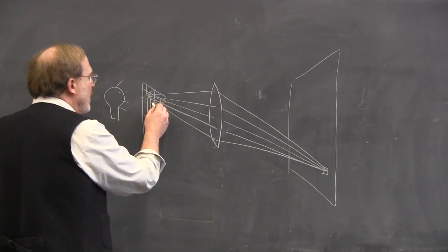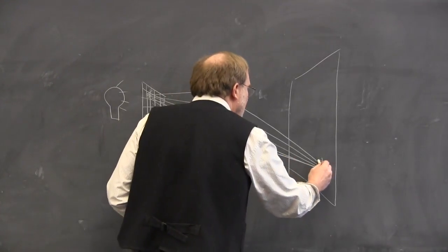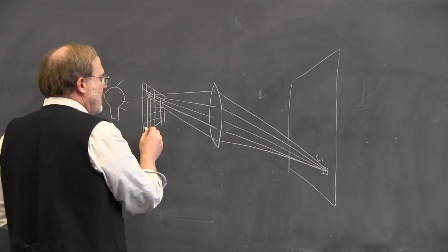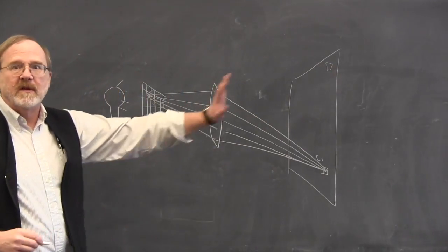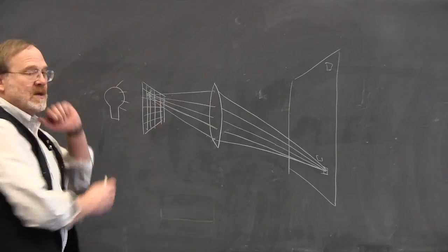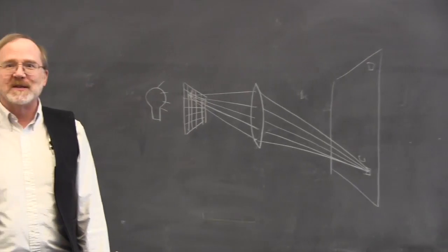This other pixel will be painted right there. This one will be painted up here, and so forth, until you fill the entire screen with an image of all the pixels on your LCD screen.